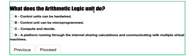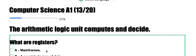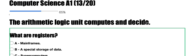So the responsibilities of an ALU unit. The processor consists of two main subunits. One is known as the arithmetic logic unit, aka ALU. Now what does the ALU do? It computes and decides. So the arithmetic logic unit computes and decides.